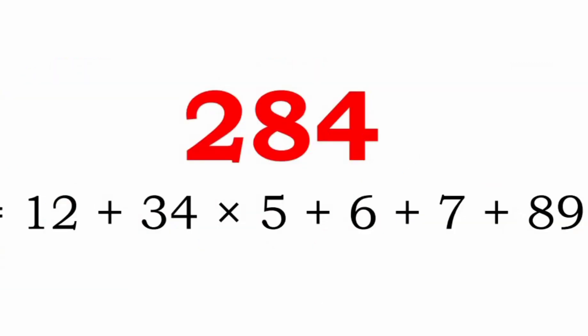The first representation of 284 goes like this: we can write 284 as 12 plus 34 into 5, plus 6 plus 7 plus 89. Here the digits 1, 2, 3, 4, 5, 6, 7, 8, and 9 are used in increasing order from 1 to 9.